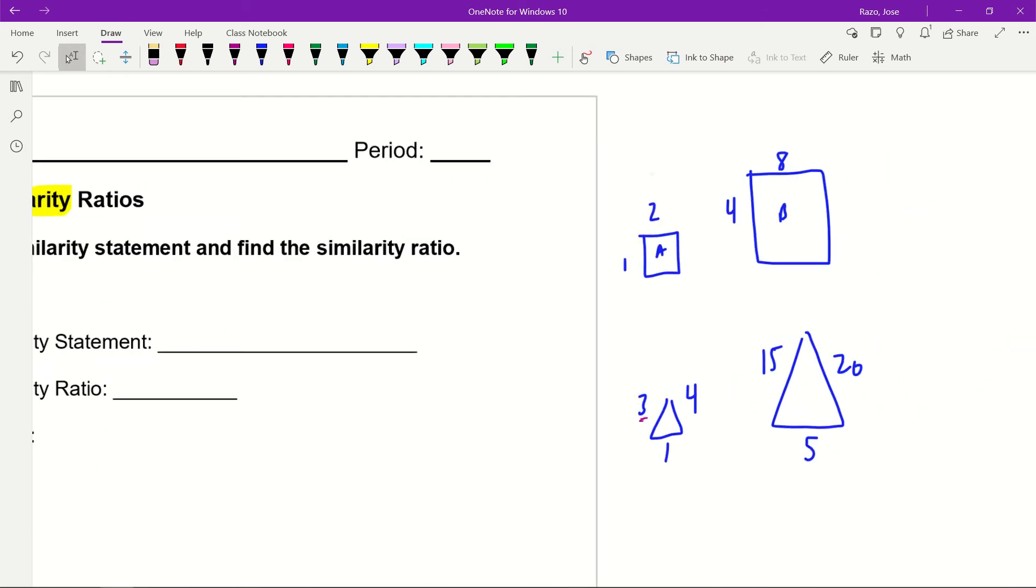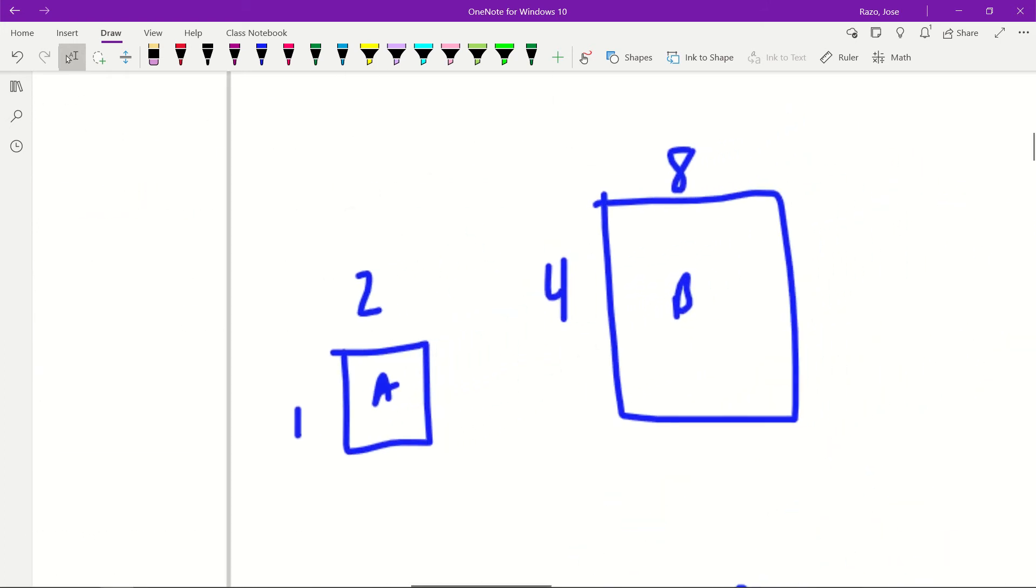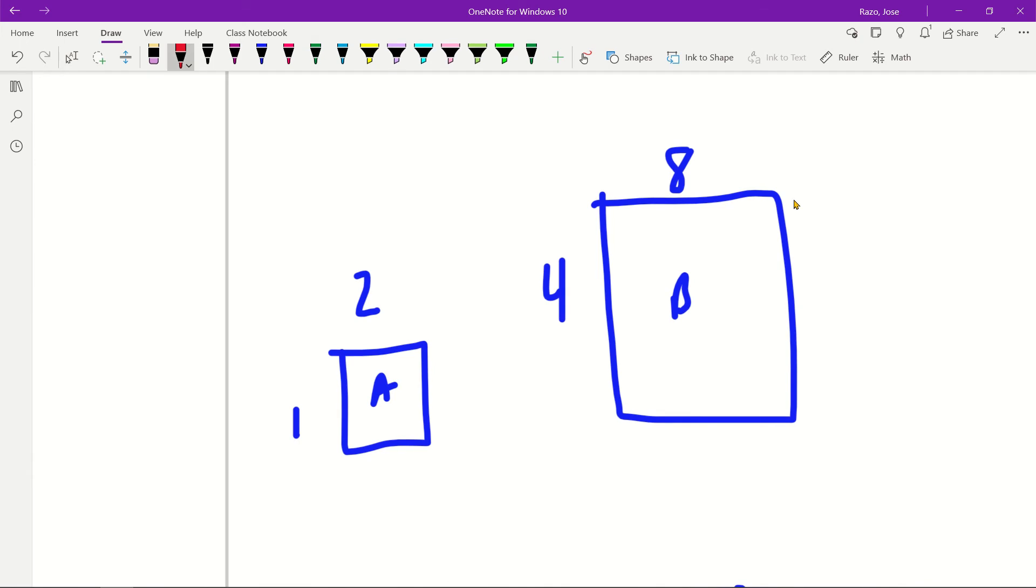When you think about the word similar, it looks the same, but in mathematics similar means you have the same shape but different sizes. Like how you have different types of shirts in different sizes - small, medium, to extra large - same shirt, same idea.